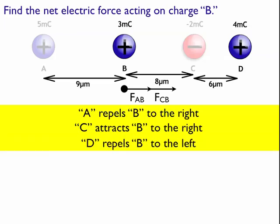So I'm going to look at this, D is going to repel B to the left. So I'll draw my arrow in my free body diagram, FDB going to the left.